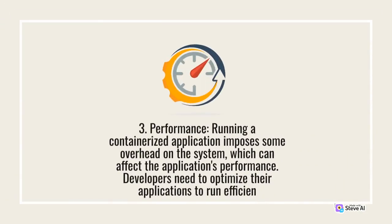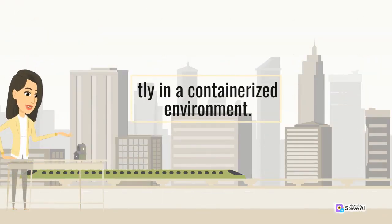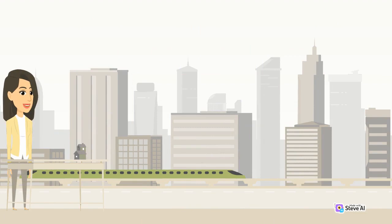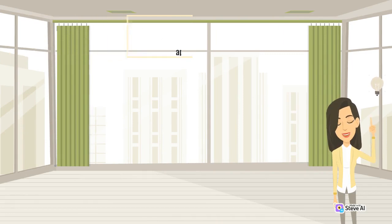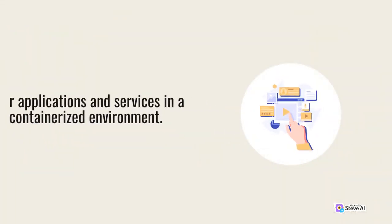Third, performance: running a containerized application imposes some overhead on the system, which can affect the application's performance. Developers need to optimize their applications to run efficiently in containerization. Fourth, networking: containerization relies on a networking model that can be challenging to configure and maintain. Developers need to ensure that their applications can communicate effectively with other applications and services in a containerized environment.